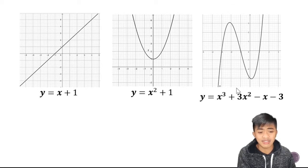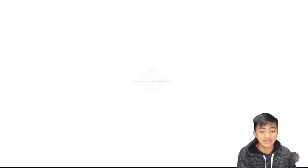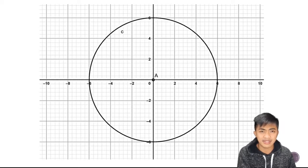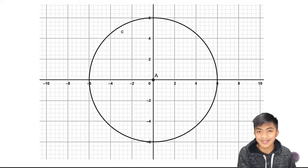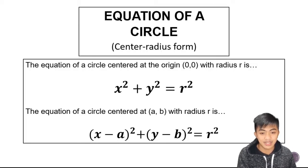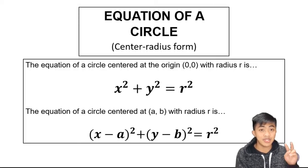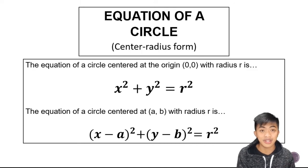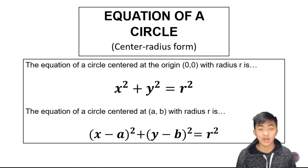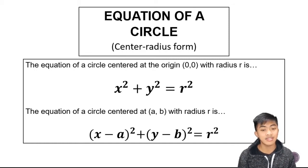And this is what its equation looks like. Now, what if it's a circle? What does an equation of a circle look like? Let's see. So there can be two forms. This is in center-radius form. Equations can be written in many forms, but what we're going to talk about today is the equation in center-radius form.